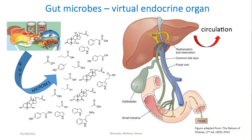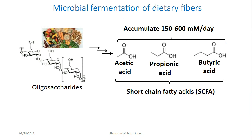One such example is production of so-called short-chain fatty acids. Dietary fibers that come from eating whole grains, fruits, and vegetables cannot be digested by host enzymes. Gut bacteria use those as a source of energy, and as a result they produce large amounts of acetic, propionic, and butyric acid, also known as short-chain fatty acids.